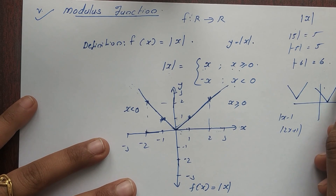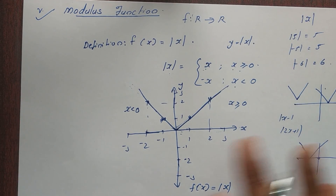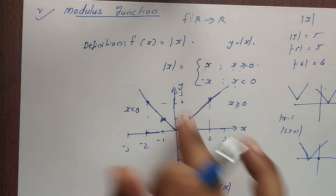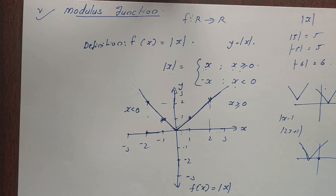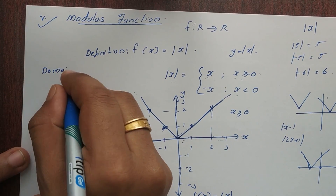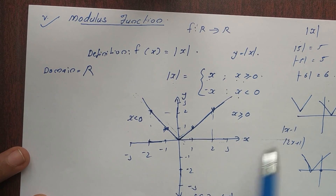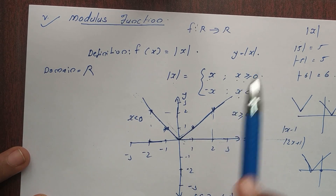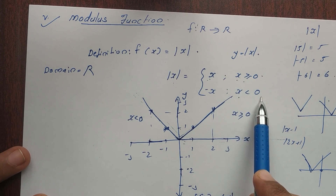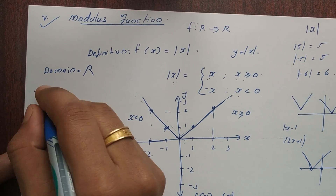If you use this graph, you can see the graph here. The graph is here. This is the origin. The graph is always in a V structure. The domain range — the domain is equal to all values including x equal to 0, so domain is equal to R.